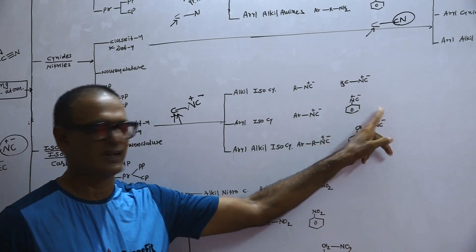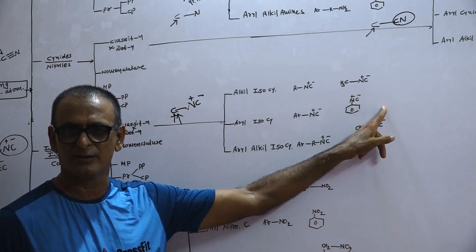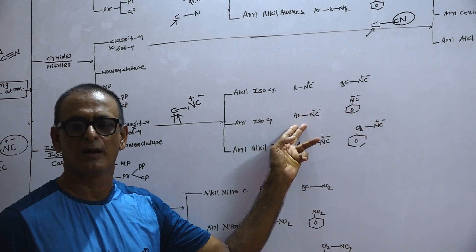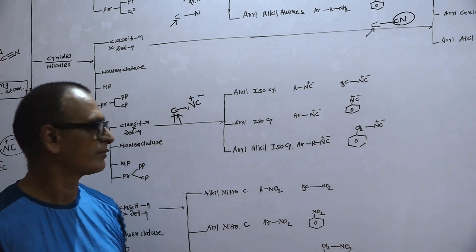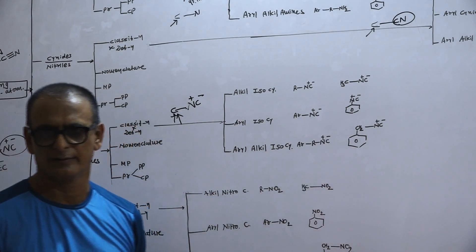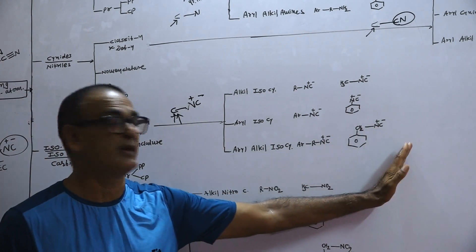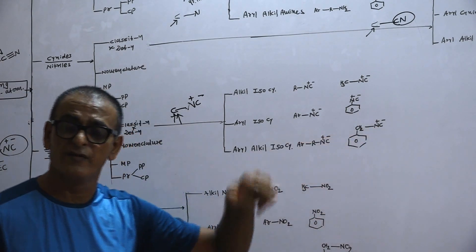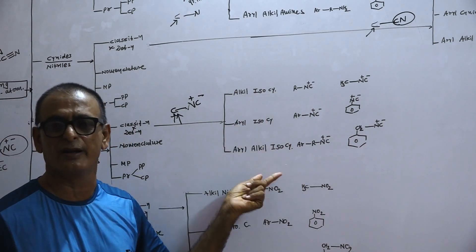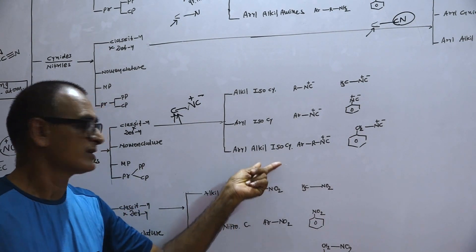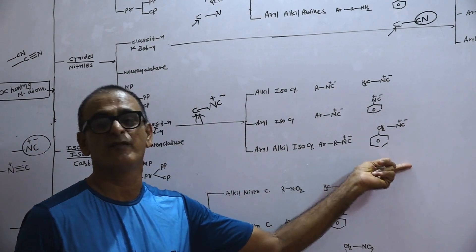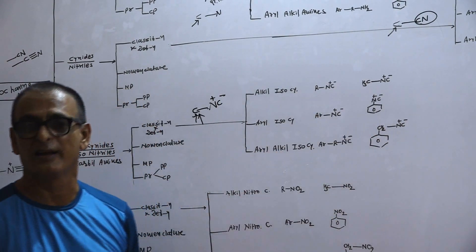An aryl isocyanide such as phenyl isocyanide has the structure ArN≡C with N+ and C−. Its general formula is ArNC. In aryl-alkyl isocyanide, the isocyanide group is added to a carbon atom that also bears a phenyl group. These compounds are derivatives of alkyl isocyanide in which one hydrogen of the alkyl isocyanide is replaced by a phenyl group.